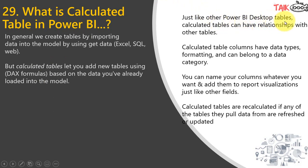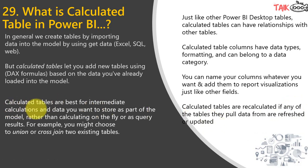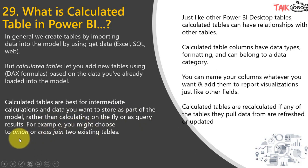Just like other Power BI desktop tables, calculated tables can have relationships with other tables. Calculated table columns have data types, formatting, and can belong to a data category. You can name your columns whatever you want and add them to report visualizations just like other fields. Calculated tables are recalculated if any of the tables they pull data from are refreshed or updated. They are best for intermediate calculations and data you want to store as part of the model, rather than calculating on the fly or as a query result — for example, you might choose to union or cross join two existing tables.